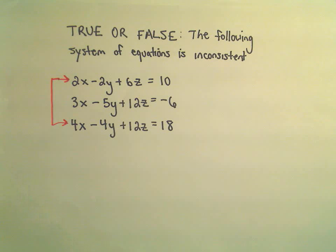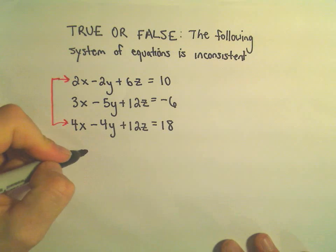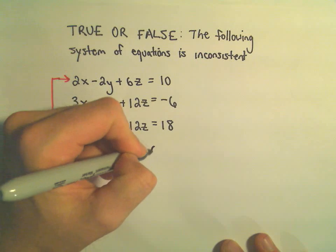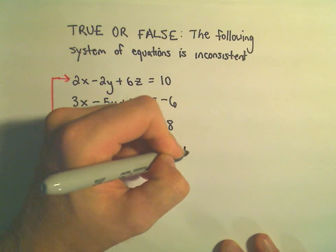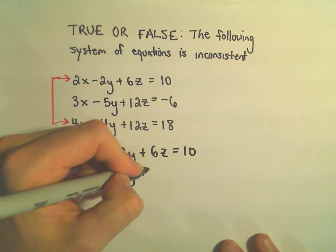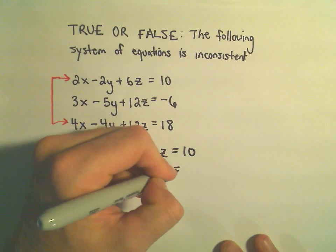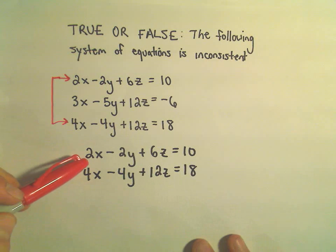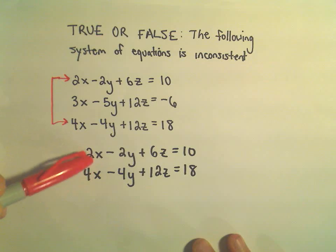I'm going to look at the first and third equation. So, notice we've got 2x minus 2y plus 6z equals 10. We've got 4x minus 4y plus 12z equals 18. Well, for example, if I wanted to try to get the x's to cancel out,